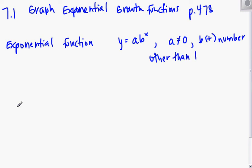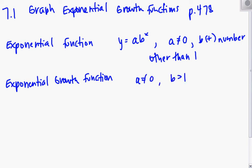Then we also have something called an exponential growth function. So if this right here is satisfied, then we have that. So exponential growth function, if a does not equal 0, and b is greater than 1. b is called our growth factor. It's how our graph is growing.